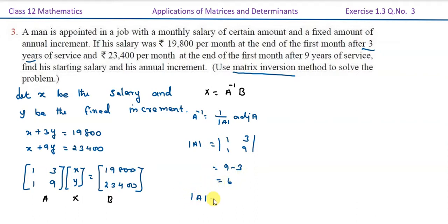Now we have to calculate adjoint of A. Adjoint of A is the cofactor matrix transposed. The leading diagonal remains the same, so we get [9, -1; -3, 1], which equals the transpose giving [9, -3; -1, 1]. Therefore A inverse equals 1/6 times [9, -3; -1, 1].